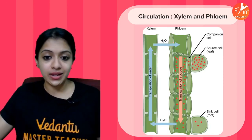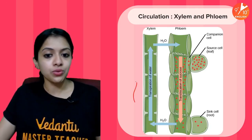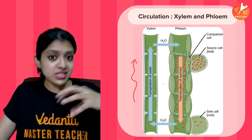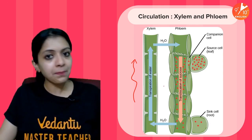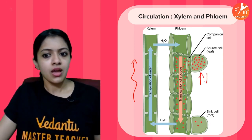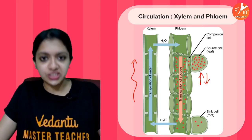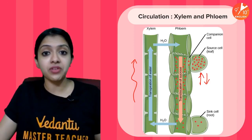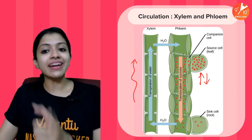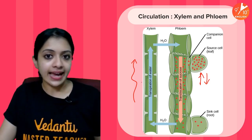Transport of water through xylem occurs unidirectionally — from the roots towards the upper parts of the plant body. Transport through phloem is bidirectional, because food prepared in the leaves has to be transported to both the upper and lower parts of the plant body. So: unidirectional in xylem, bidirectional in phloem.